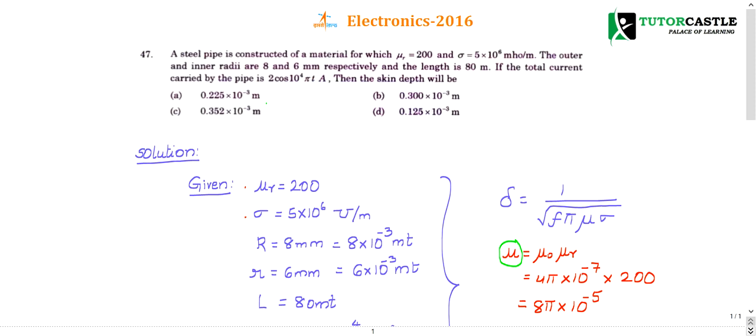Question number 47: A steel pipe is constructed of a material for which μr is 200 and σ is 5×10^6 mho per meter. The outer and inner radius are 8 and 6 millimeter respectively, and the length is 80 meters. If the total current carried by the pipe is I = 2cos(10^4π t), then the skin depth will be...